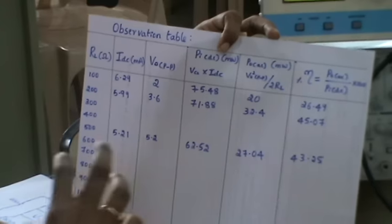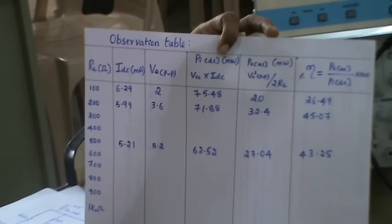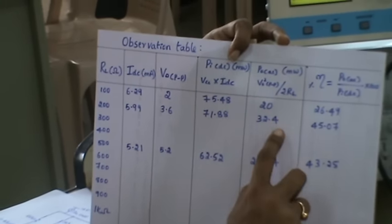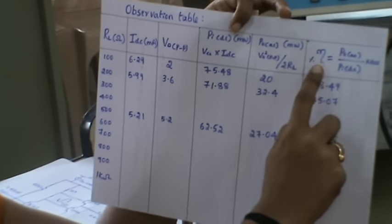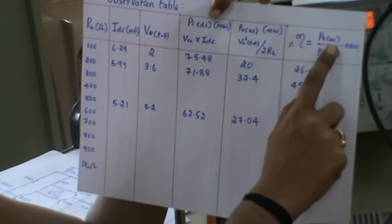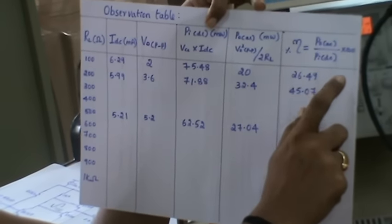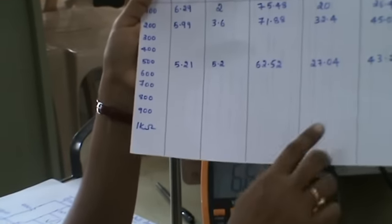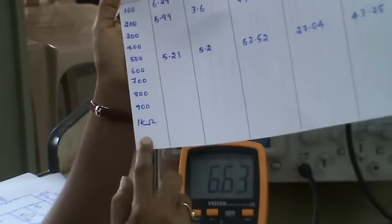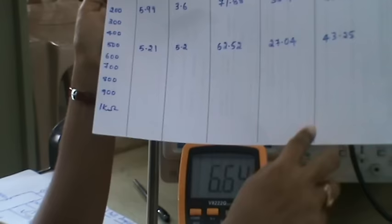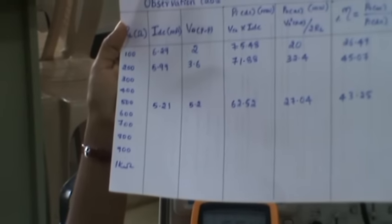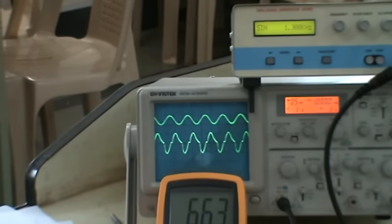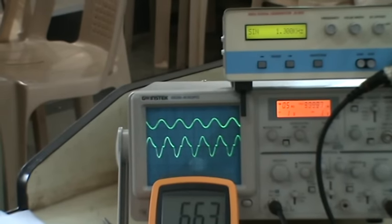Here we are considering 2 because two complementary transistors are used in Class B push-pull amplifier, that is NPN and PNP, so together it is 2RL. To calculate efficiency: P0 power divided by PIDC into 100. We know that the load resistor value or DRB can be varied from 100 to 1 kilo ohm. Within this we get maximum and minimum efficiency, and theoretically the maximum efficiency is 78.54 percent.